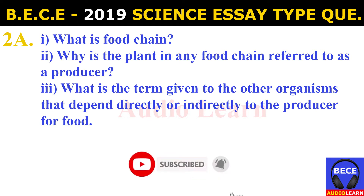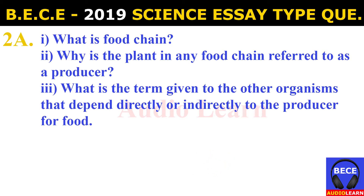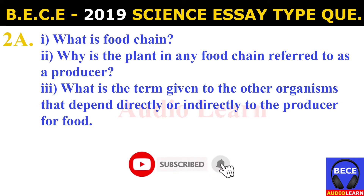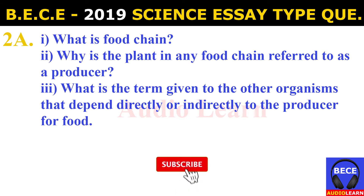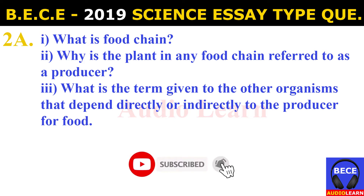2019 science essay type questions, question number 2a(i): What is a food chain? A food chain is the linear feeding relationship between organisms in a particular habitat, which involves eating and being eaten and the transfer of energy from one organism to another.